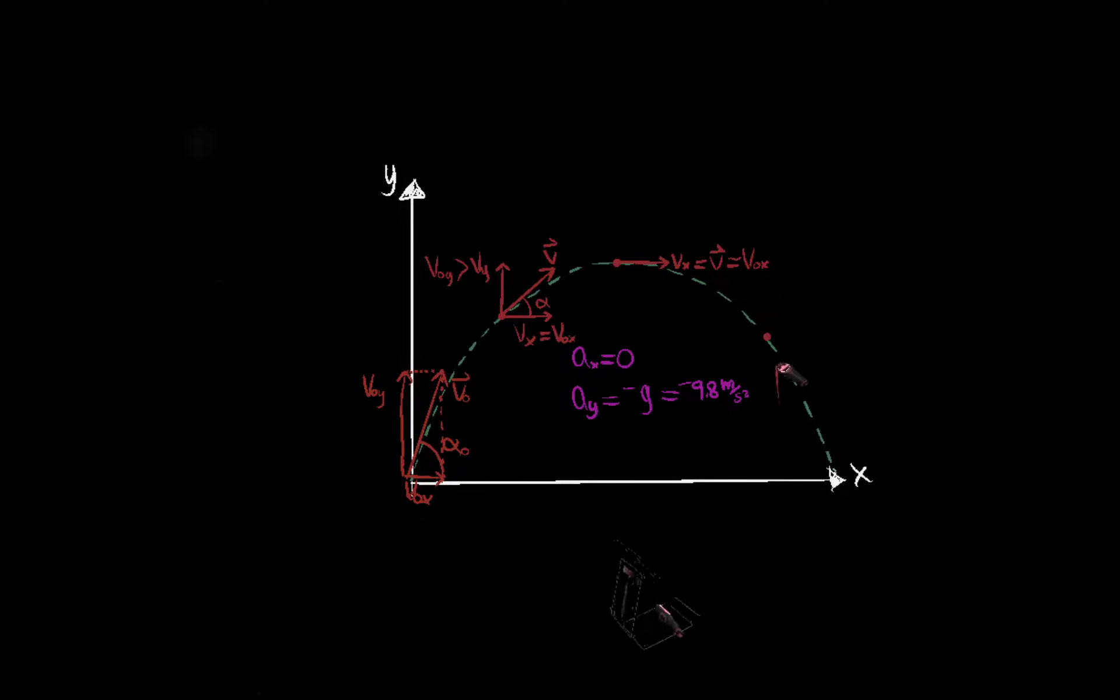And then finally at this point here, the velocity vector is again tangent. The x component of velocity is v x equal to v naught x, still. It's unchanging, because there's no acceleration applying in the x direction. And v y is now downwards. And the angle from the horizontal is the angle that we are considering. So that means this is angle alpha at that point in time.